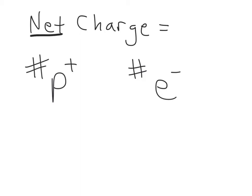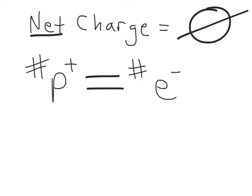The net or overall charge of an atom is equal to zero. This means that the number of positively charged protons must equal the number of negatively charged electrons. The number of positive charges cancels out the number of negative charges, so the overall net charge is zero.